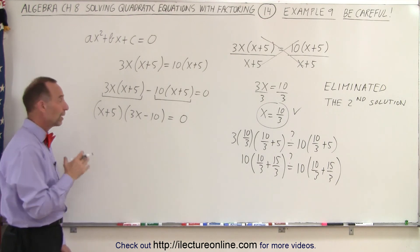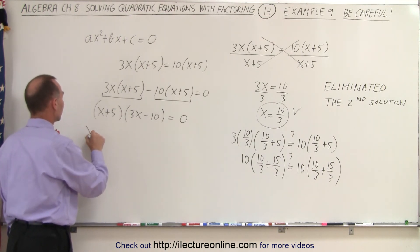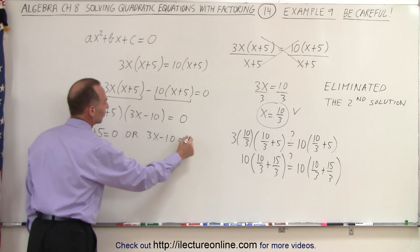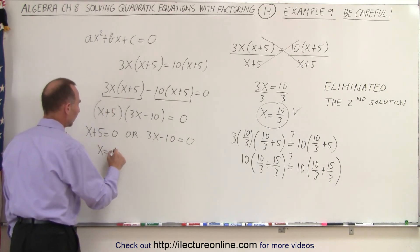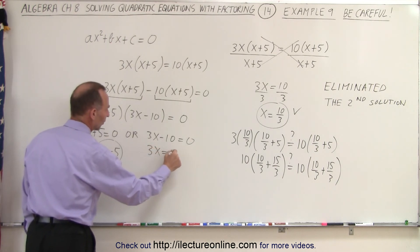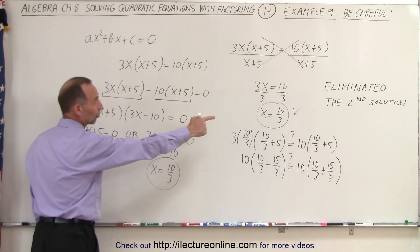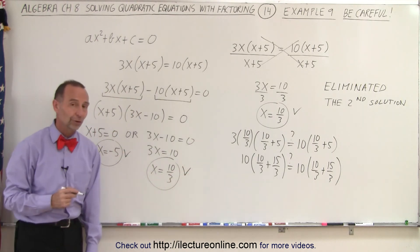Now I have the product of two binomials. When I multiply them I get 0, which means that either x plus 5 is equal to 0 or 3x minus 10 is equal to 0. Which means in this case x equals negative 5. And in this case I can write that 3x equals 10 or x equals 10 thirds. Notice that was one of the solutions that I got over here. But now I also have the other solution.